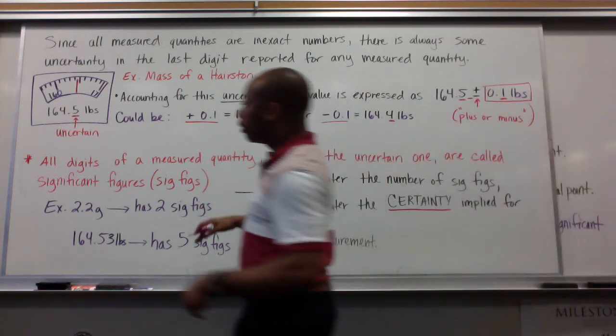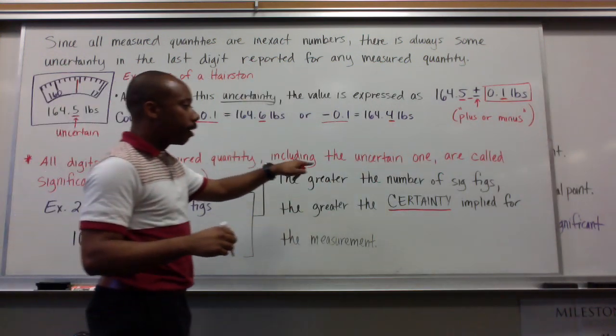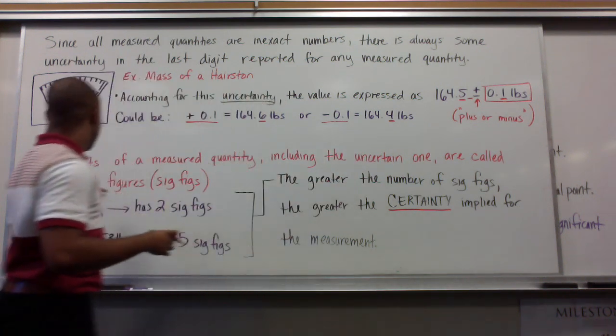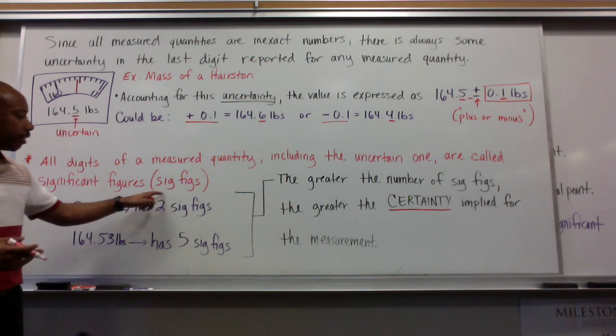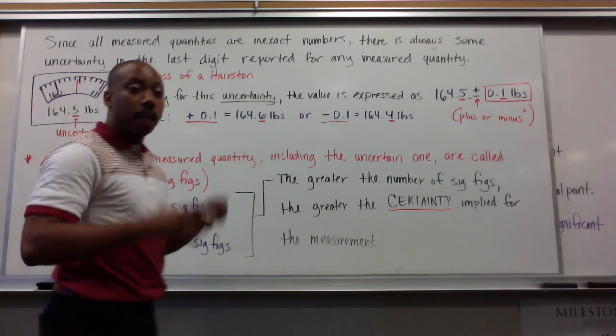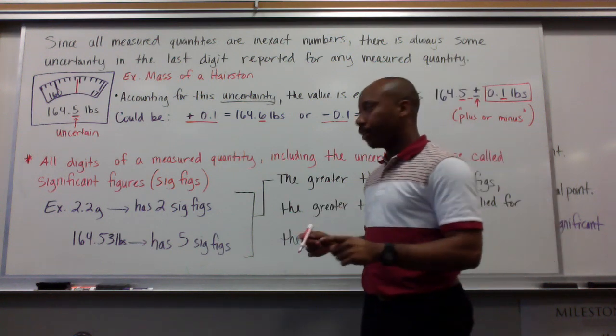Now, all digits of measured quantities, including the uncertain one, that last digit, are called significant figures. We abbreviate significant figures as sig figs. Again, all digits of a measured quantity, including the one that's uncertain, the one that you've guessed, are called significant figures.